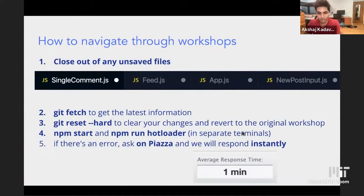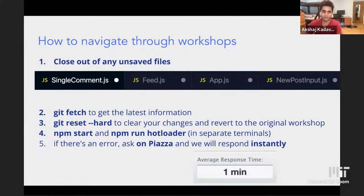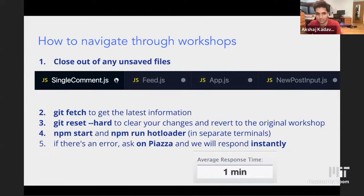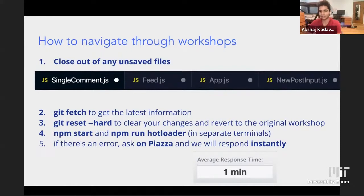Before we get started, just a quick thing I noticed in past workshops. I know we do git fetch and git reset hard all the time, but one thing that might help before you do any of that is to close out any of these unsaved files with the little white circles, because it won't reset those usually. So you want to exit out of those — it doesn't matter if you save them or not, but once you do that, things will be good.